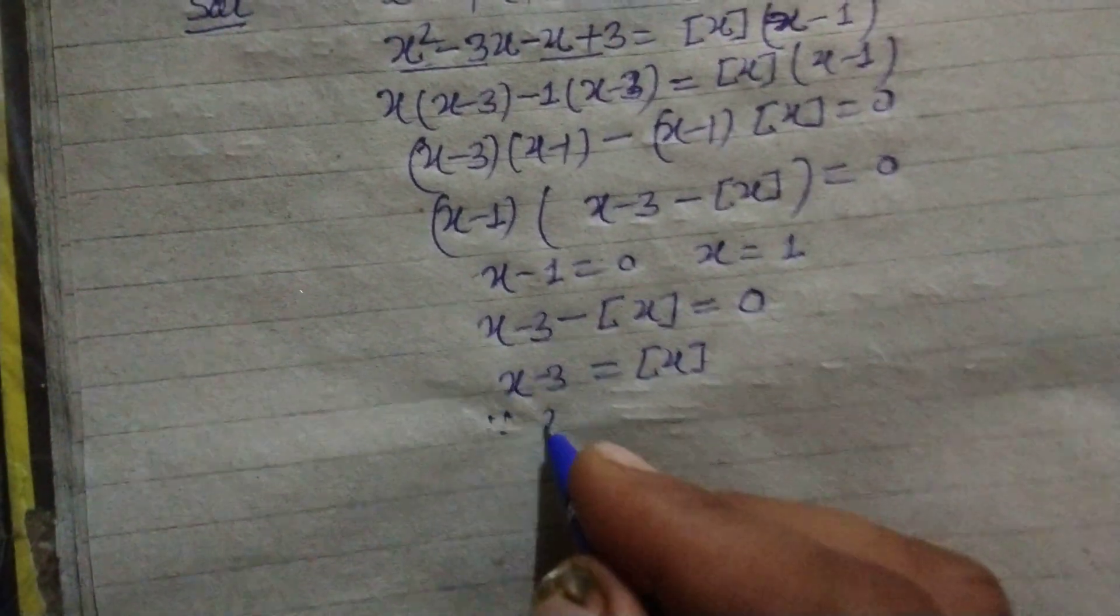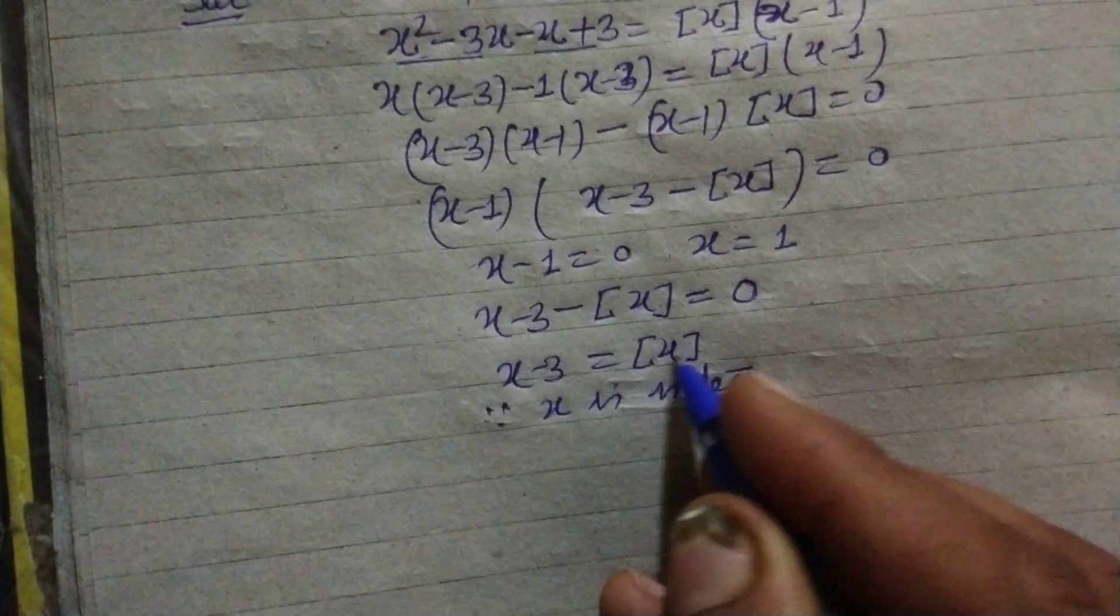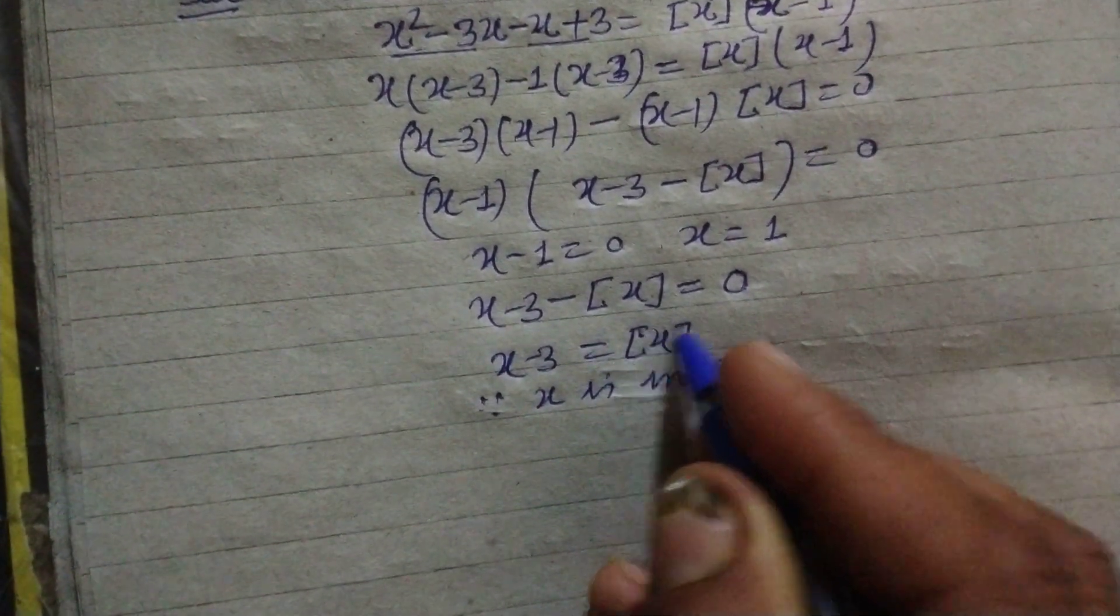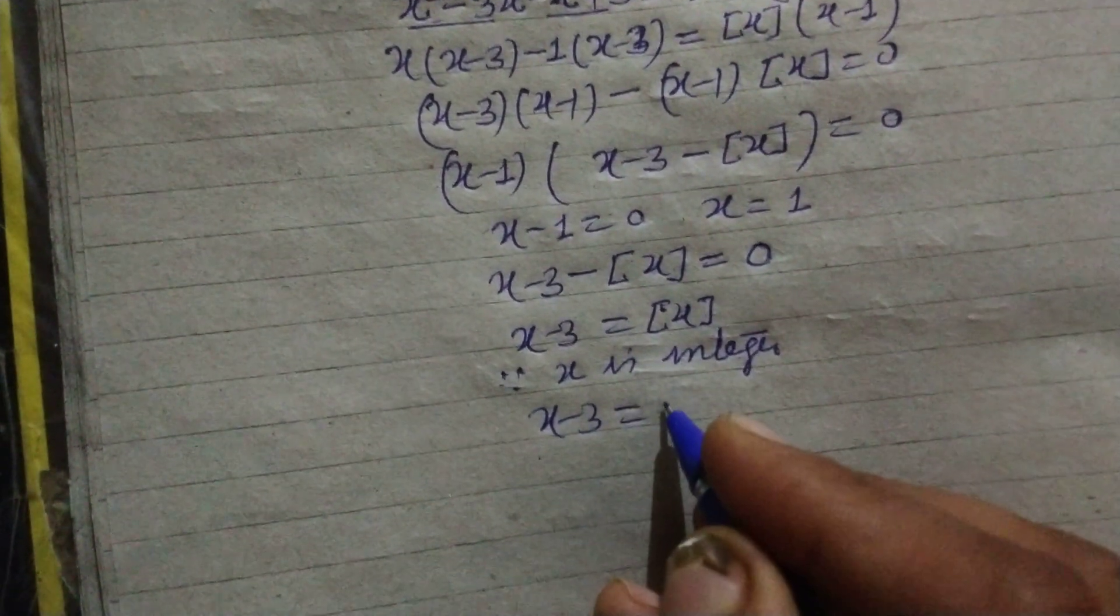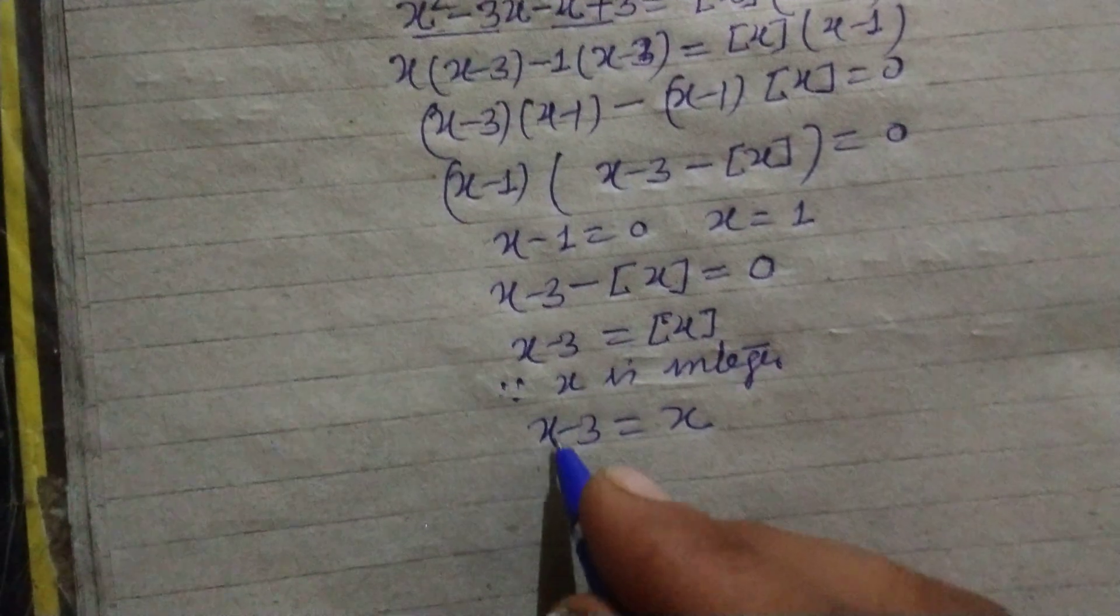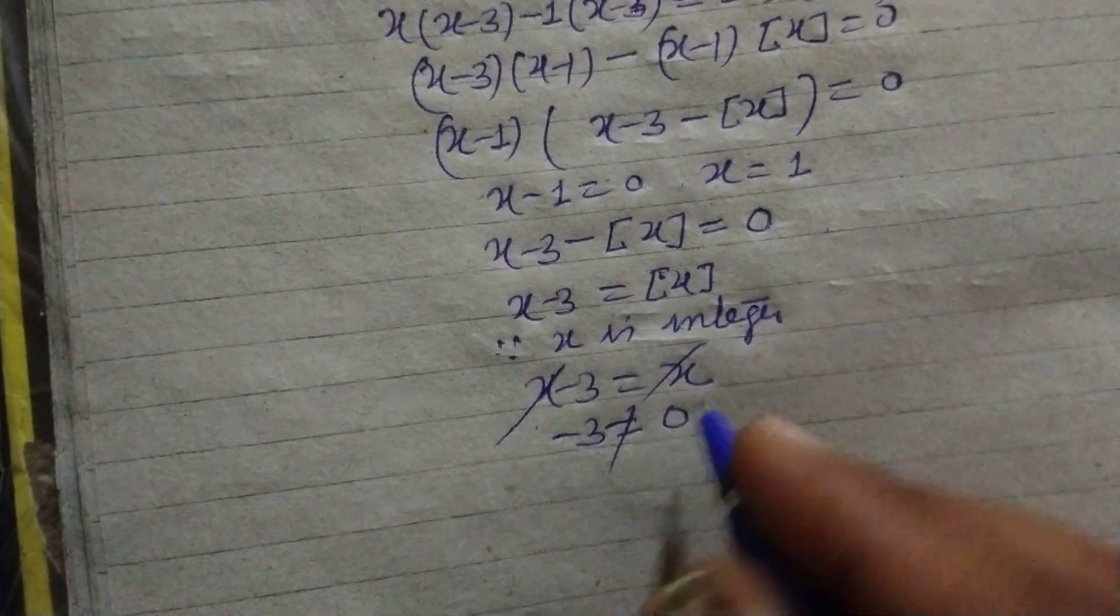Here x - [x] is x, so x - 3 = x, it means -3 = 0 which is not possible, not possible.